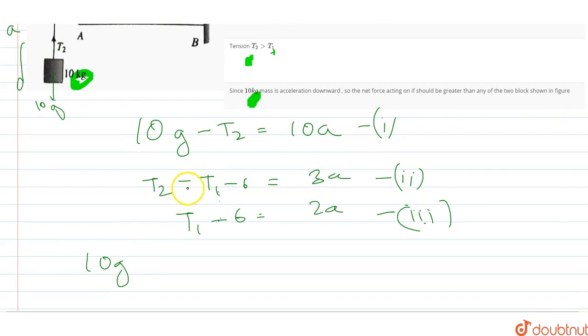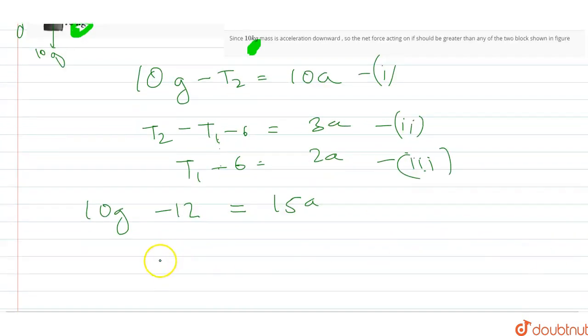So my equation will be 10g. T2 and T2 will cancel. T1 and T1 will cancel. Minus 6, minus 6, minus 12 is equal to, I will add everything, so it will be 15A. So here the acceleration value has come. What will happen? 100 minus 12, you will get 88 by 15.